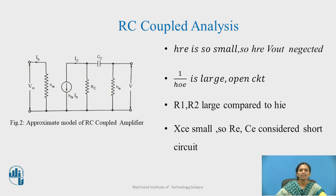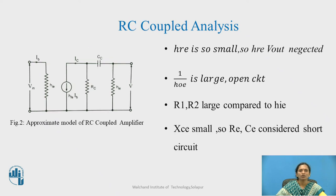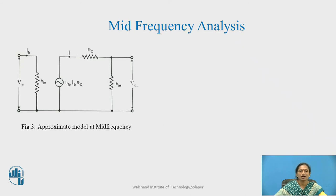If we analyze this further, we will get the frequency response of the RC coupled amplifier. Here what I have done? I have converted this particular current source into the voltage source. Therefore, it will be HFAIB into RC in series with the RC. Yes and this is shown over here.